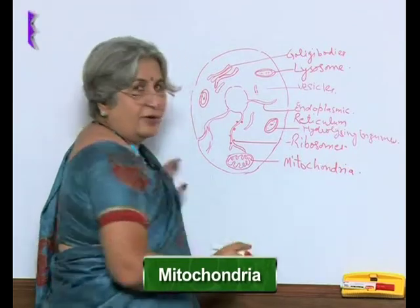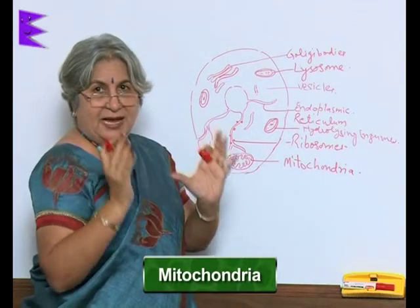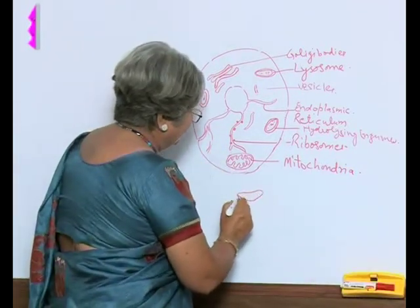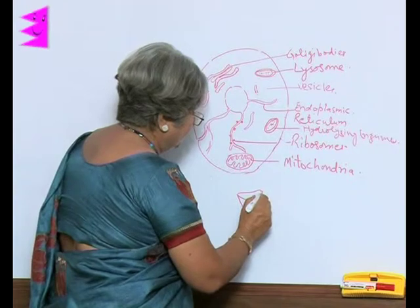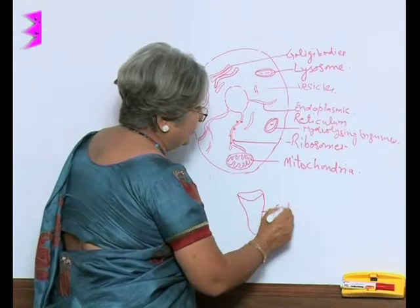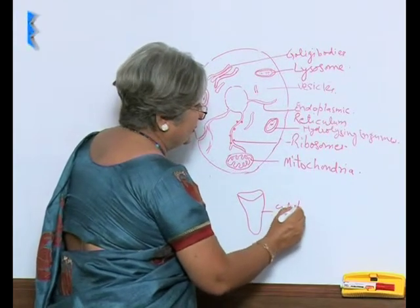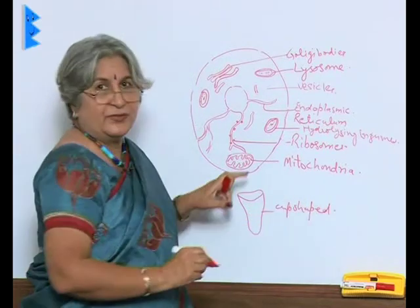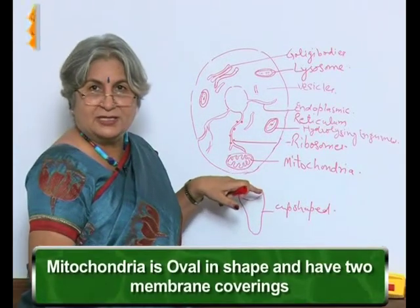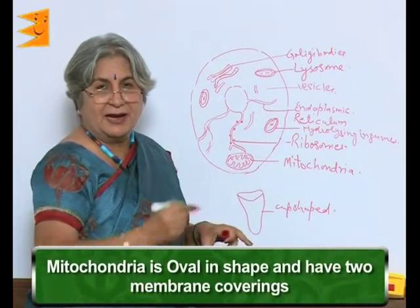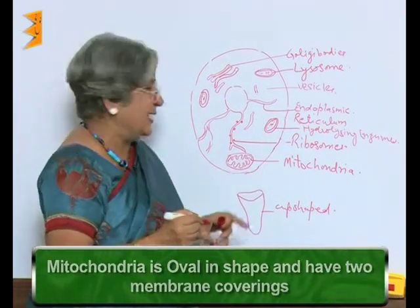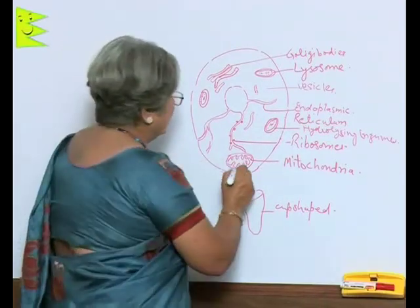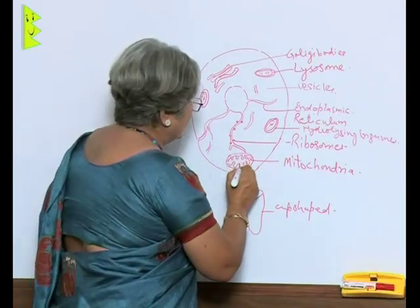A mitochondria when seen as a whole is cup-shaped. But under the electron microscope it is oval in shape, double membrane, and the inner lining forms the finger-like processes which are called cristae.